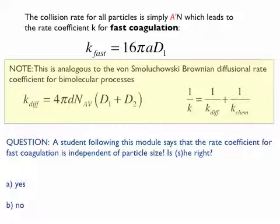And that's exactly the same as the Smoluchowski-Brownian diffusion rate for biomolecular reactions. So, biomolecular reactions, you might know that 1 over K for any biomolecular reaction would be 1 over K diffusion. Two molecules have to meet before they can do something, plus 1 over K chemistry.